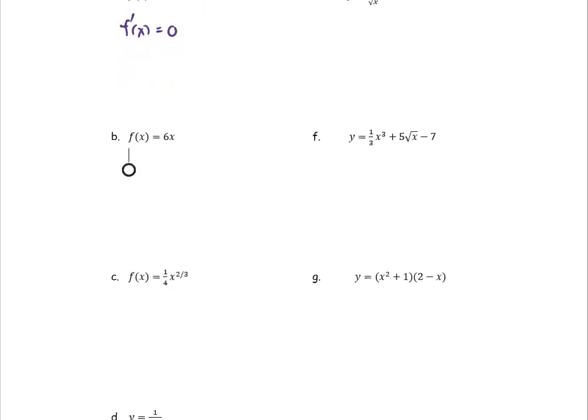For the next one, f(x) equals 6x. This is the same form as the line y equals mx plus b, and we know that m is the y prime. In our case, part b, the m is 6. So we can say f prime, or the derivative of f(x), equals 6.